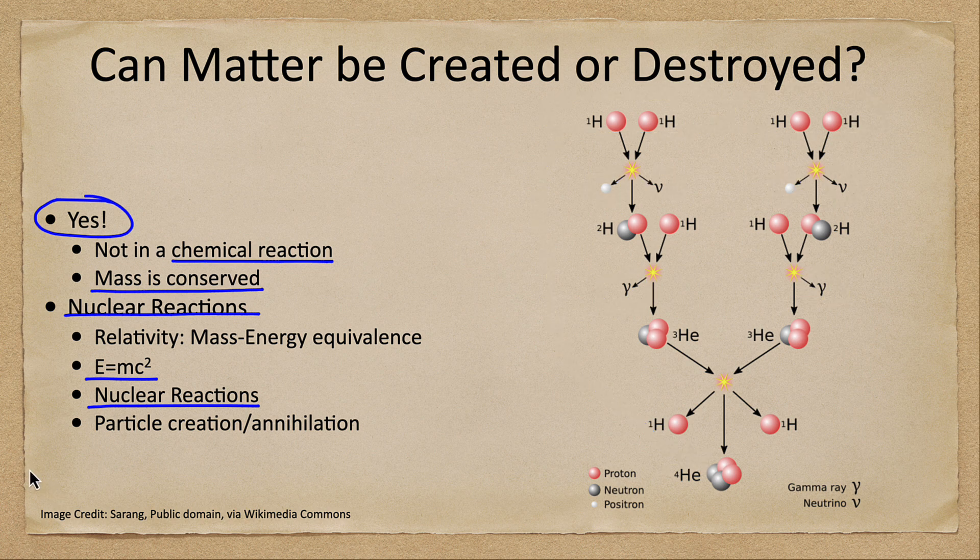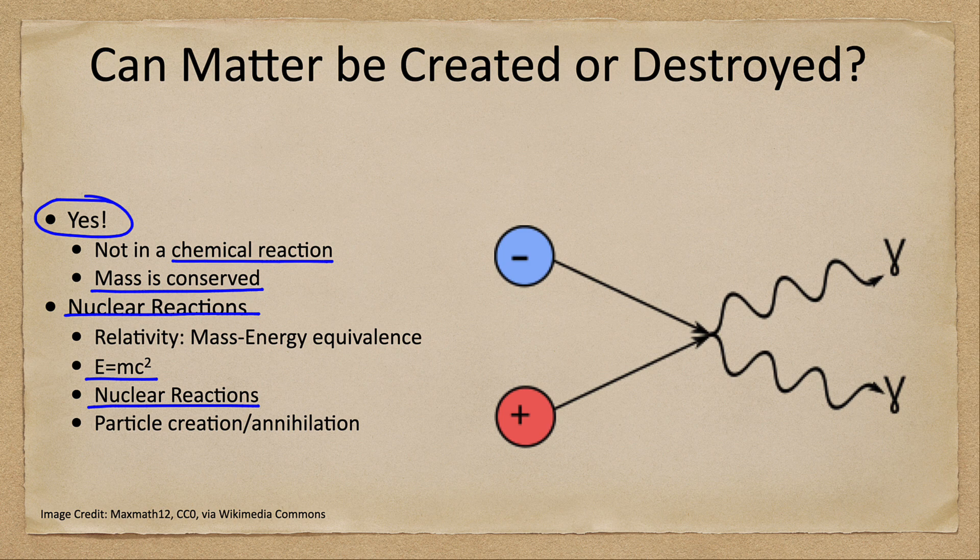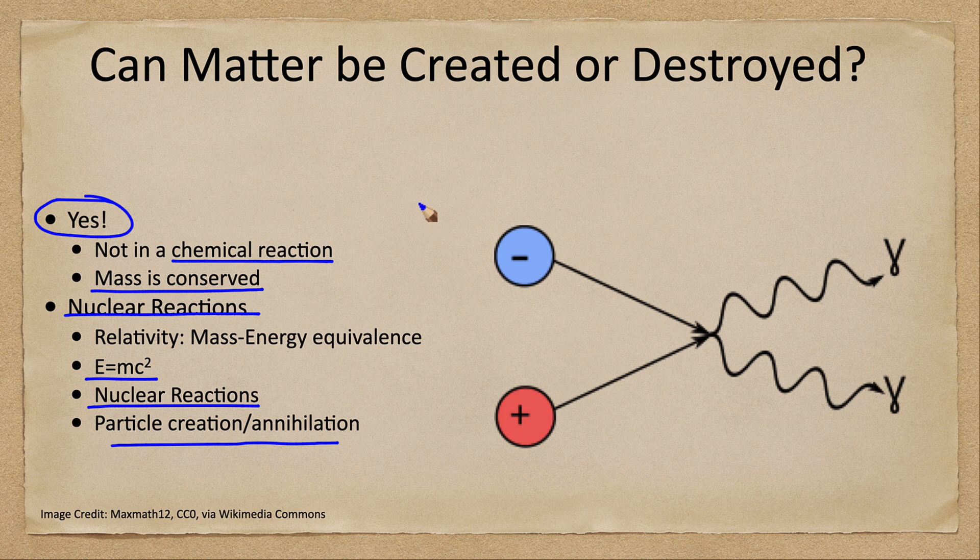Now another example of when this occurs is when you have particle creation or annihilation. That means that you can take, say, an electron here and a positron.